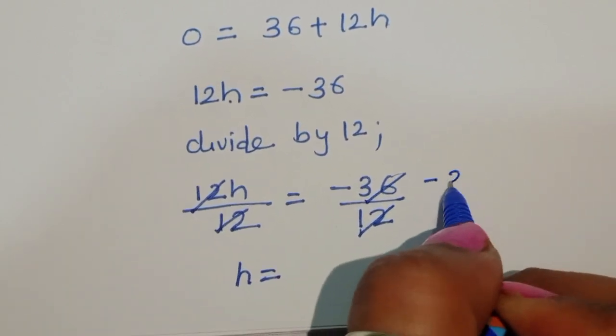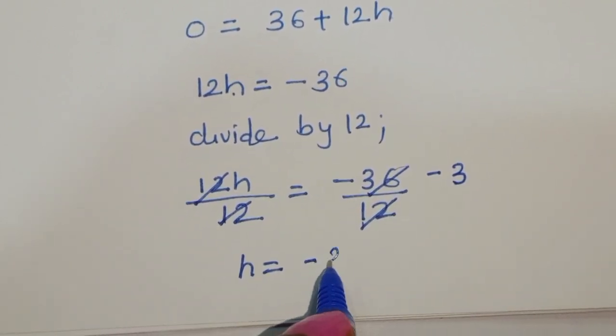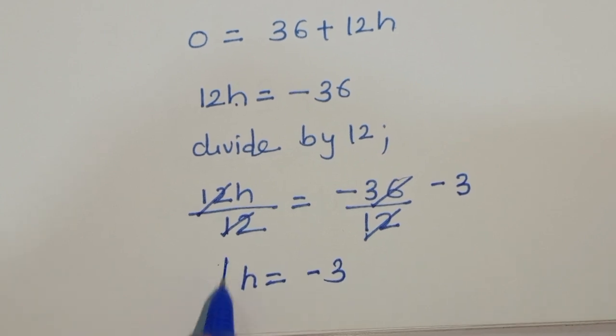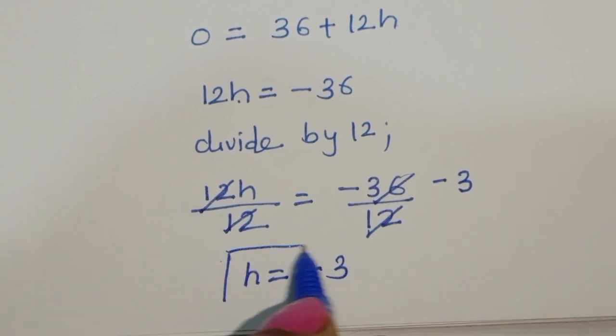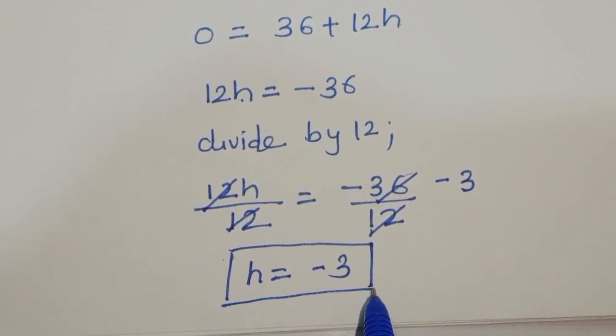So 36 divided by minus 12, h is equal to minus 3. We got the value of h, that is minus 3.